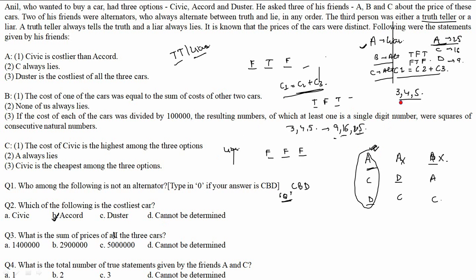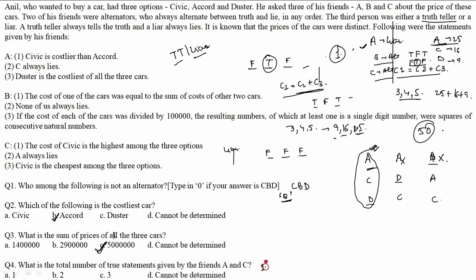Question 2: Which of the following is the costliest car? In both cases, the pricing order is Accord 25 lakhs, Civic 16 lakhs, Duster 9 lakhs. The costliest car is Accord in both cases. So the answer is B part — Accord.